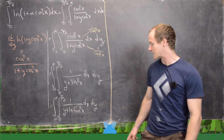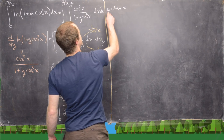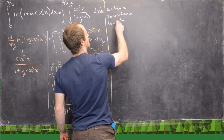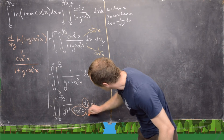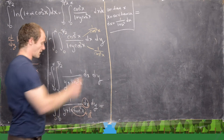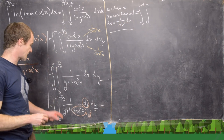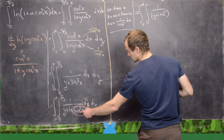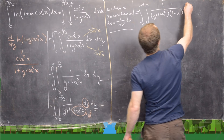Now I'll make a u-substitution: let u equal tangent of x. That means x equals arctan(u) and dx equals 1 over 1 plus u squared, du. In the integrand the tangent squared term becomes u squared. So we get the integral from 0 to α, the integral with new u bounds, of 1 over (y plus 1 plus u²) times 1 over (1 plus u²), du dy.